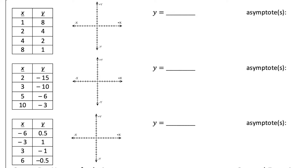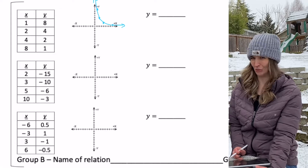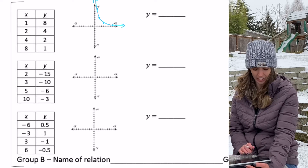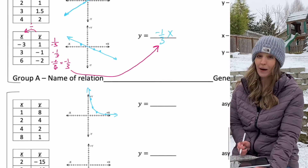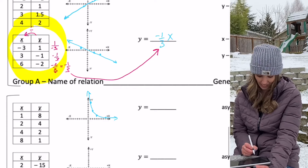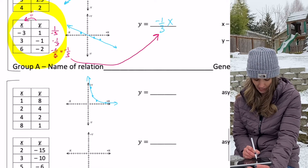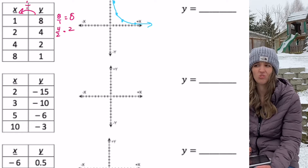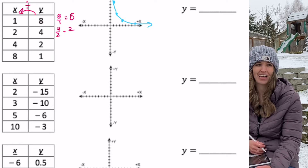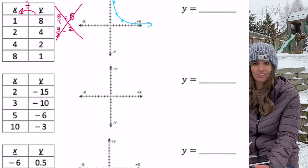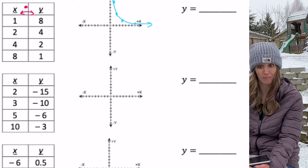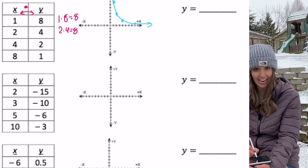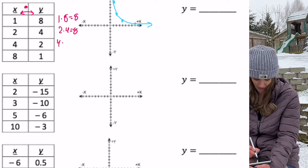Let's start this next section the same way — plot these points. These do not look linear. Above, we divided y by x, so 8 divided by 1 gives 8, and 4 divided by 2 gives 2 — I'm not getting a constant. So let's not do that. Let's try multiplying them instead.